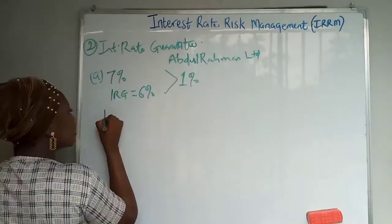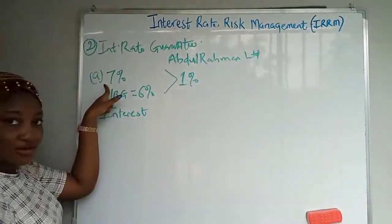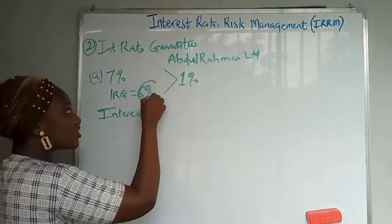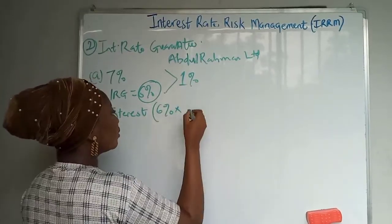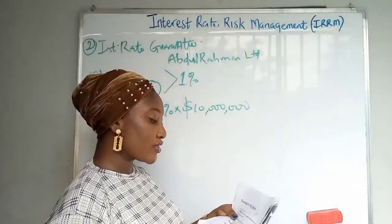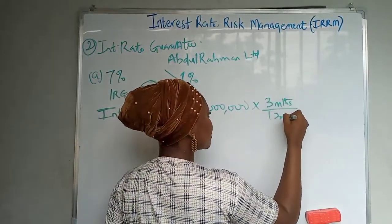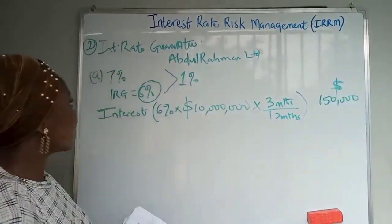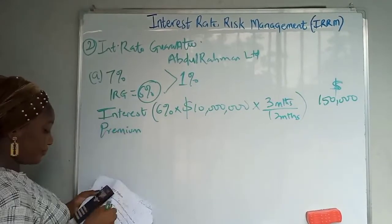For scenario A, the reference interest rate in three months is seven percent, compared to the agreed IRG rate of six percent — a difference of one percent. Because it's a guarantee, you pay interest at six percent. That's six percent multiplied by the loan amount of ten million dollars, prorated for three months over 12, giving you 150,000 dollars.